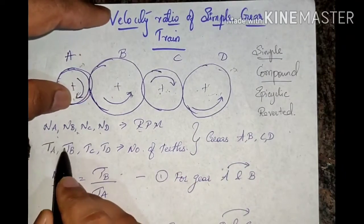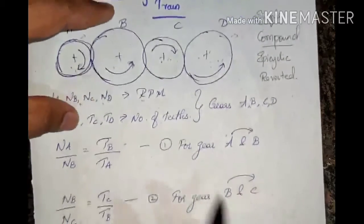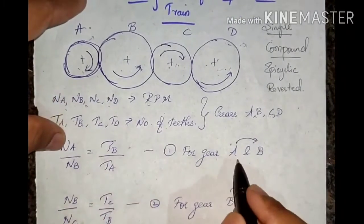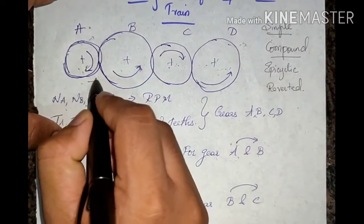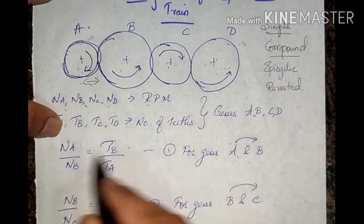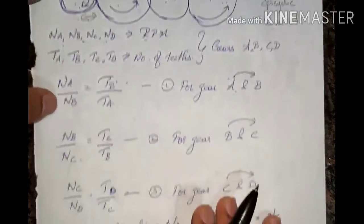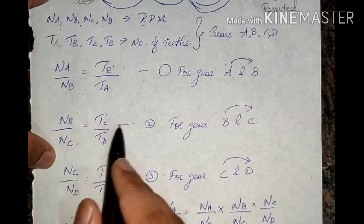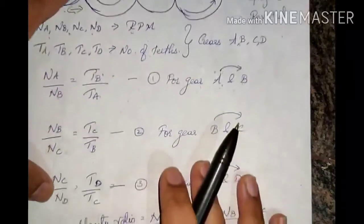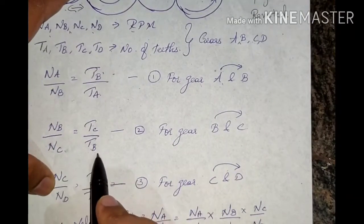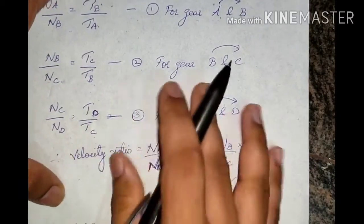TA, TB, TC, and TD are the number of teeth for gears A, B, C, and D. For gears A and B meshing with each other: NA/NB = TB/TA — equation 1. For gears B and C meshing with each other: NB/NC = TC/TB — equation 2. For gears C and D meshing with each other: NC/ND = TD/TC — equation 3. Always remember that speed is inversely proportional to the number of teeth.